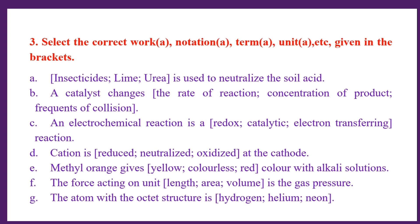Number C: An electrochemical reaction is a redox reaction involving electron transference. Number D: A cation is reduced, neutralized, or oxidized at the electrode.